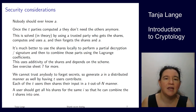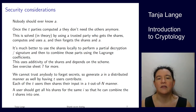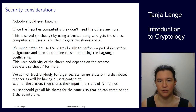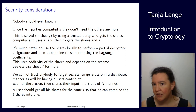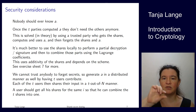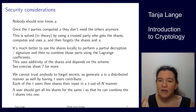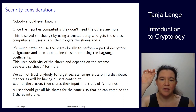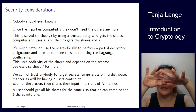The way to generate a distributedly: t users each pick some integer a_i, and then a is simply the sum of those t integers. Nobody knows the full a. They can still compute the public key g to the a as g^(a_1) times g^(a_2) times g^(a_3), and so on — without anyone learning a.